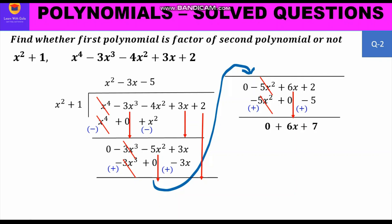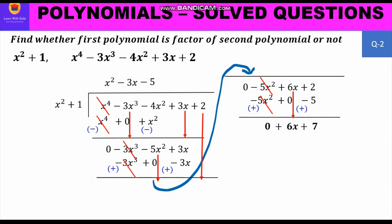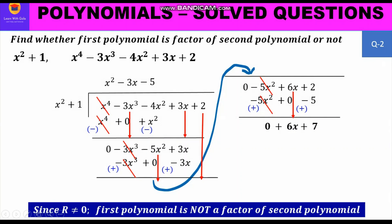We bring down 6x, giving a remainder of 6x + 7. The degree of 6x + 7 is 1, but the degree of the divisor x² + 1 is 2. Since the degree of the divisor is greater than the degree of the remainder, we cannot divide further. This is our final remainder. Since the remainder is not equal to 0, the first polynomial is not a factor of the second polynomial.